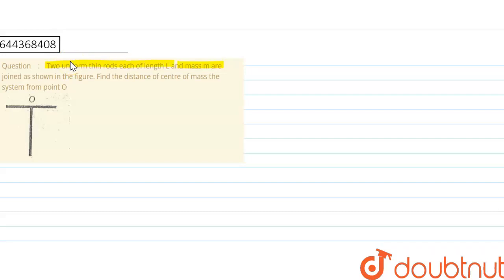Two uniform thin rods, each of length L and mass m, are joined as shown in the figure. Find the distance of the center of mass of the system from point O.